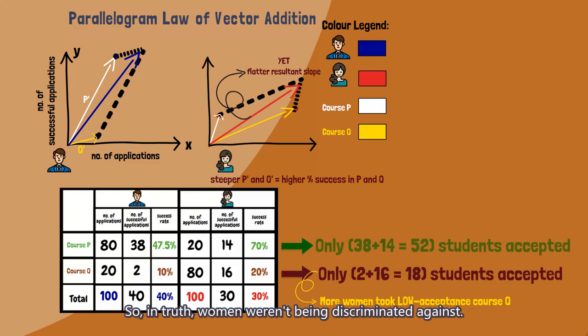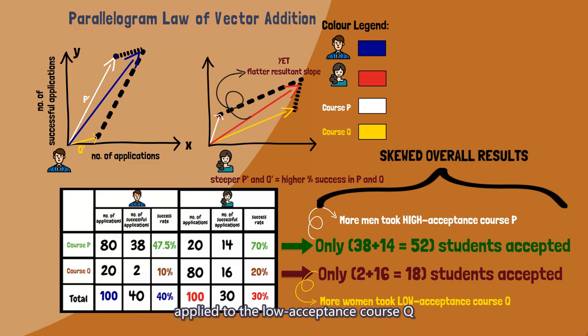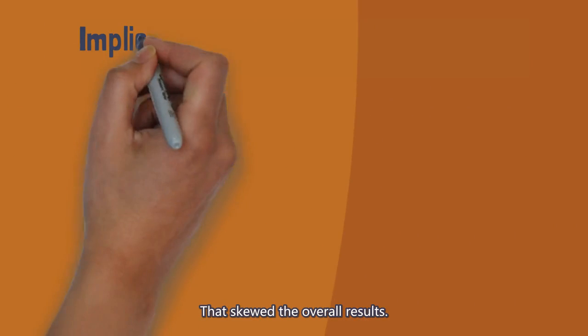So, in truth, women weren't being discriminated against. It just so happened that a larger proportion of women applied to the low acceptance Course Q, while a larger proportion of men applied to the high acceptance Course P. That skewed the overall results.